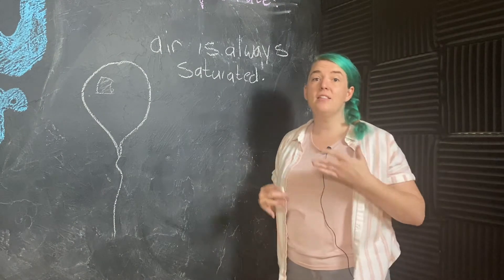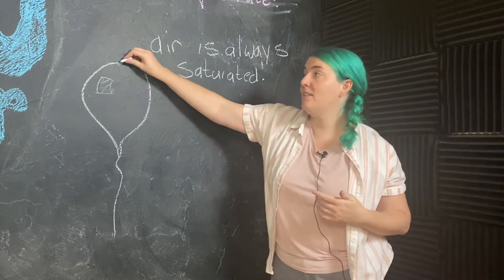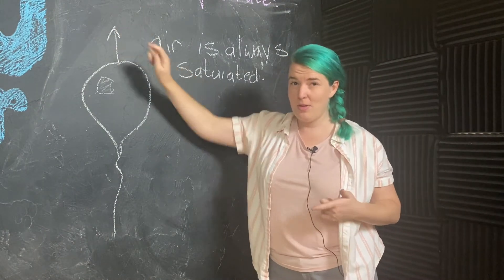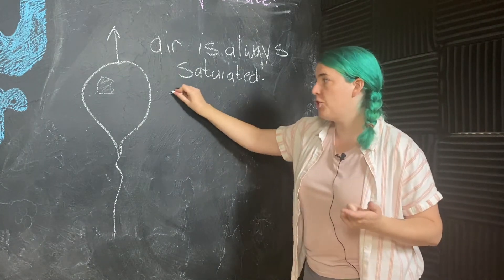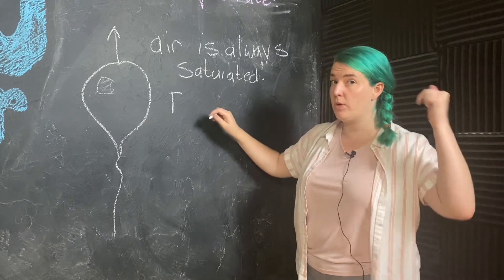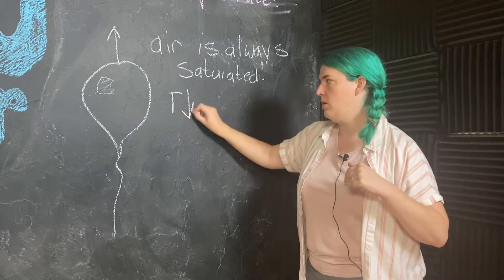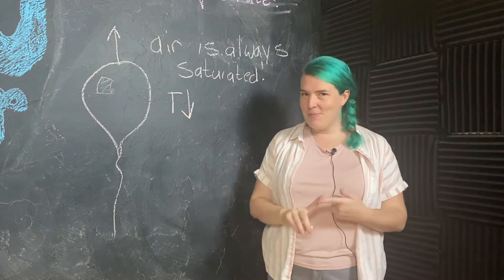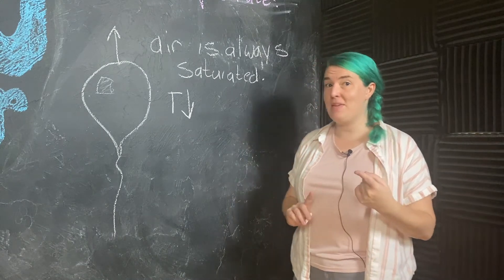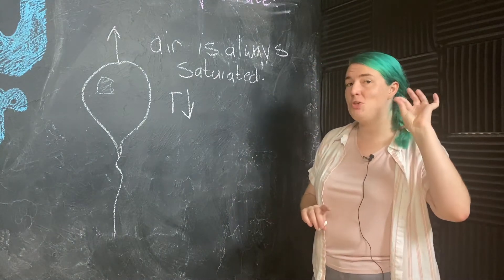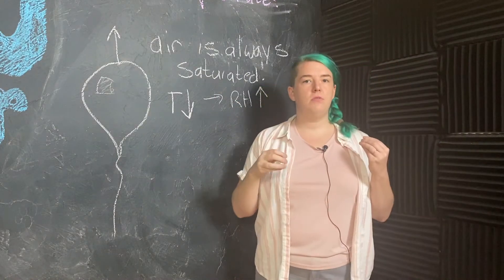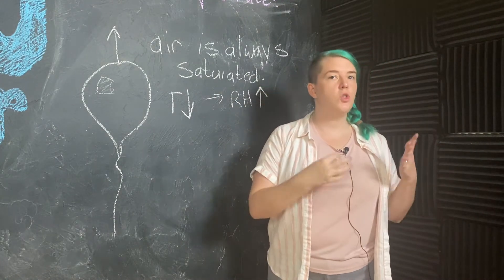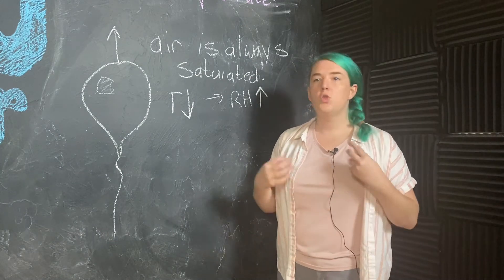So if the air is saturated and I lift my balloon up, due to adiabatic processes, due to the drop in pressure, the temperature inside my balloon is going to go down. Well, if the temperature goes down, that means my relative humidity is going to go up, and now the system is supersaturated.